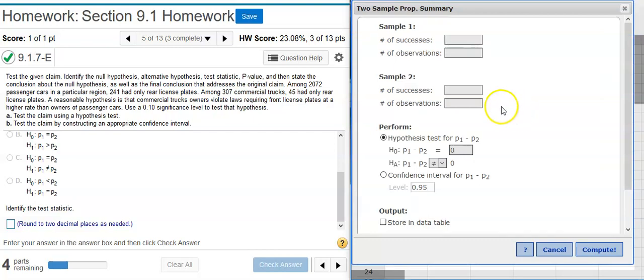Here in the Options window, we need to put in some statistics for our samples. The first sample is the one that was mentioned first, which is the passenger cars. So, the number of successes, we're going to consider a success having only a rear license plate. So, I take that number right there from the problem statement, 241. And I'm going to put in the total number of observations, which is the total number of cars, 2072. I do the same thing with the trucks.